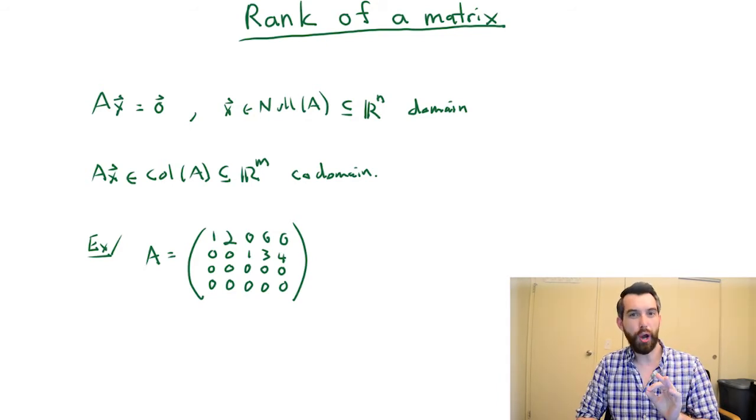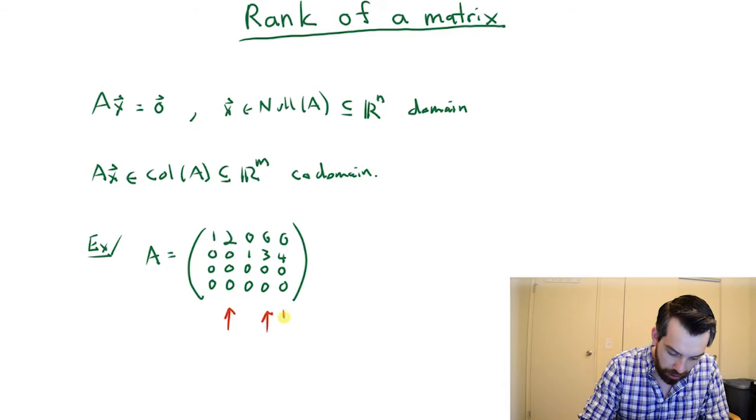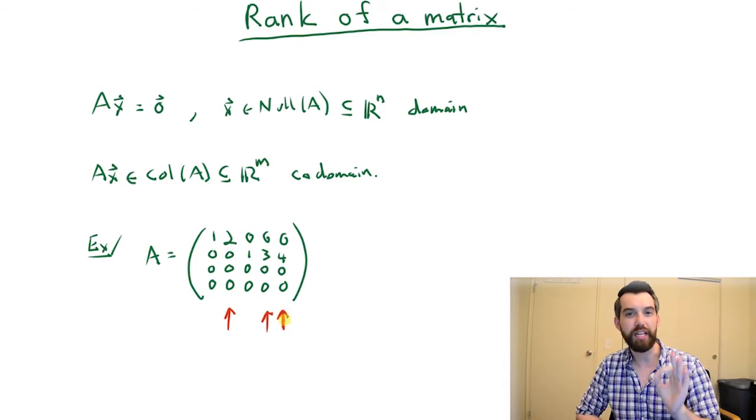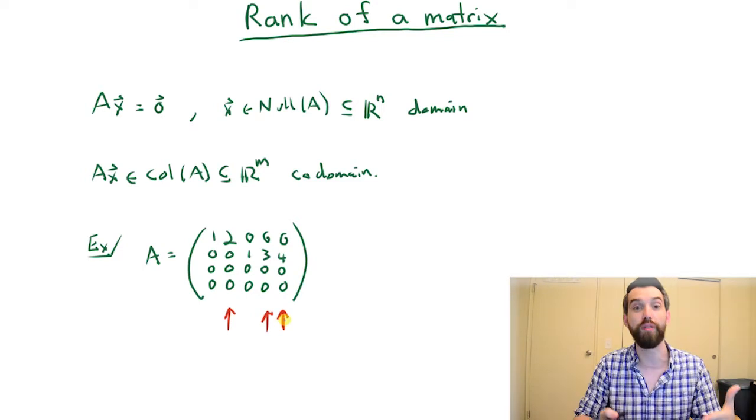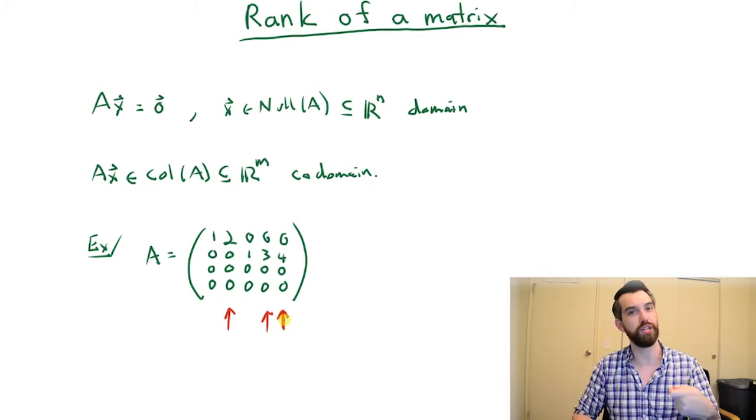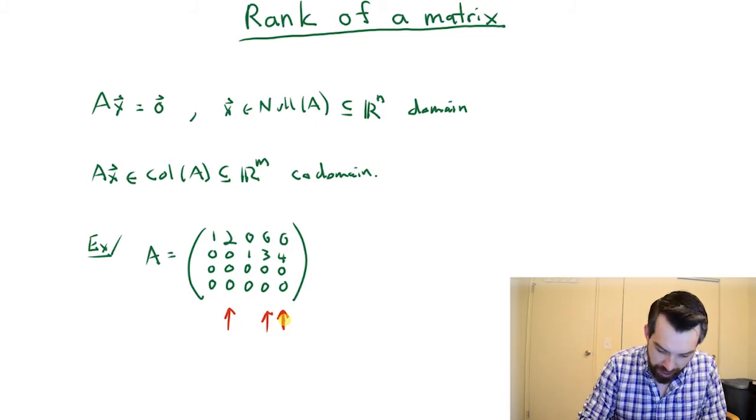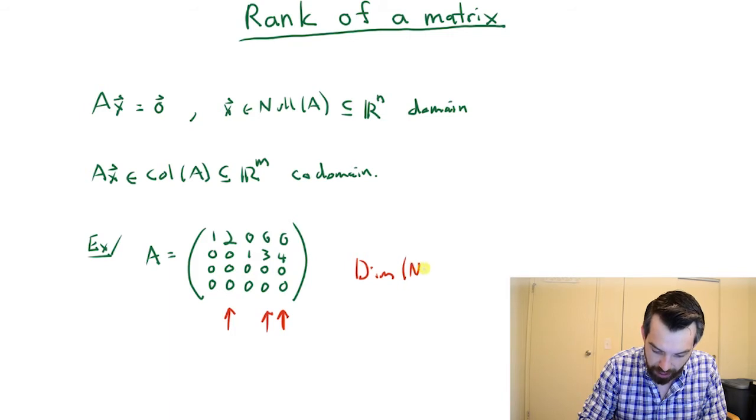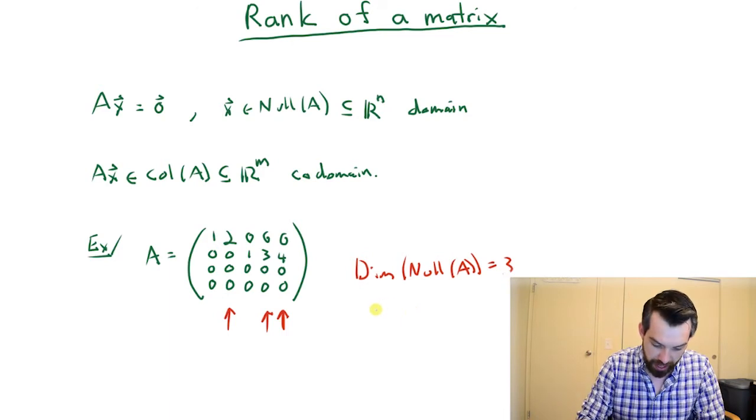I want to notice two things. First, we've previously talked about how to find the null space. The null space is in a sense generated by the columns that do not have a leading one in them. We would put a parameter into each of the variables, the second, the fourth, and the fifth in this particular case. You would do your back substitution and you would get out of it three vectors, one for each of these associated free columns. So the dimension of that null space in this particular case is equal to three. Generically, this is going to be the number of free columns.